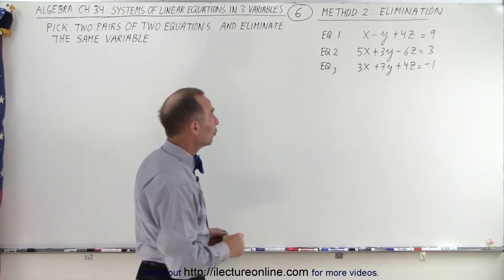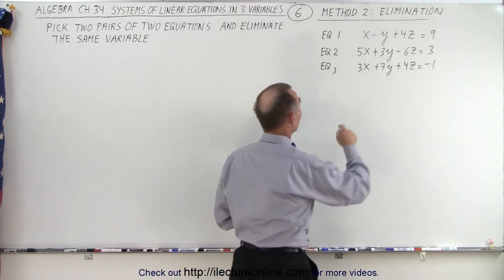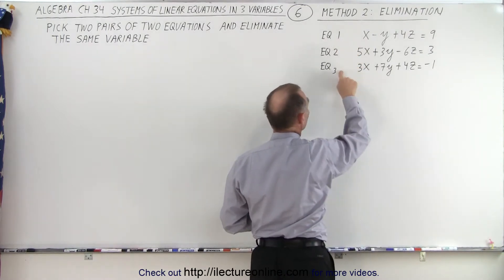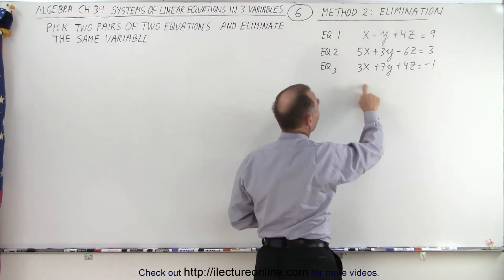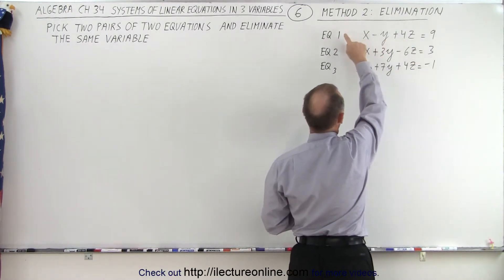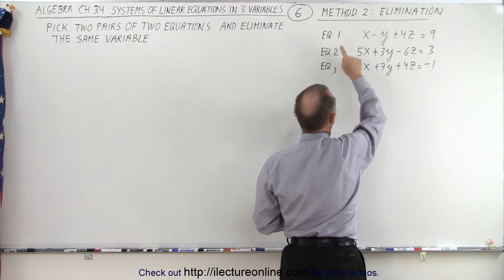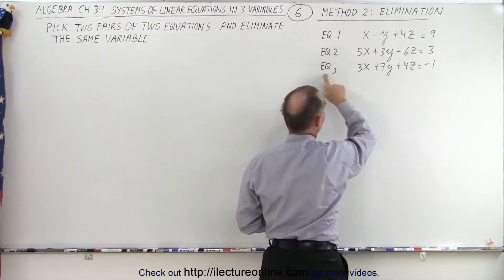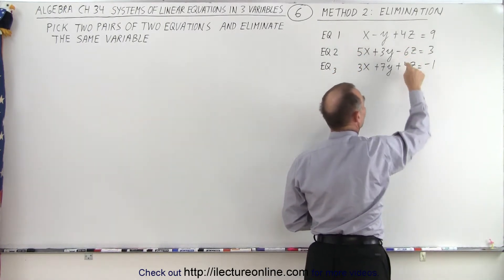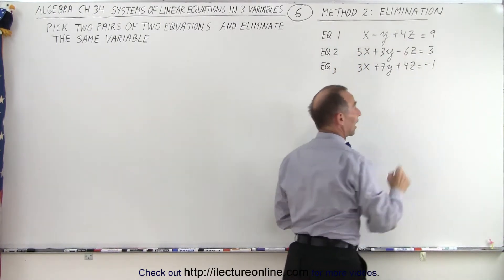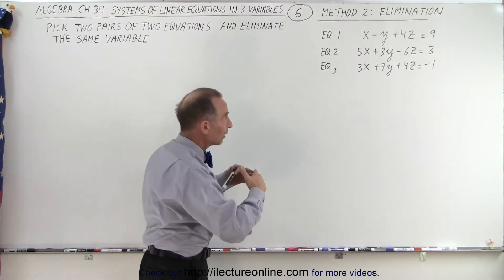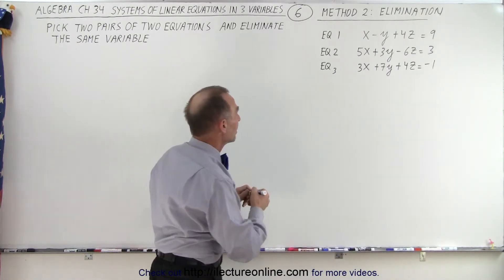So what we're going to do is first take equation number one and number three together. Notice if I take equation number one and add to that the negative of equation number three, then the z will cancel out. So our first attempt will be to get rid of the z.